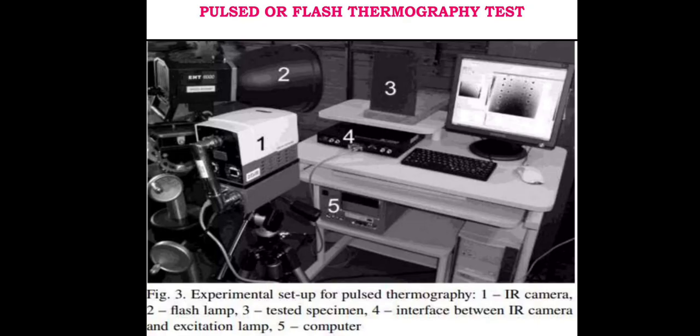Pulsed or flash thermography test. In this technique, xenon flash tubes are used as an energy source to pulse heat the specimen surface. The duration of the pulse may vary from a few microseconds using flashes to several seconds using lamps. The duration and energy source depends on the thermophysical properties of both the specimen and the flaw.